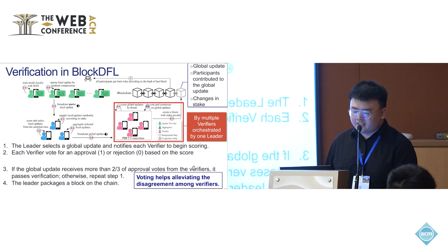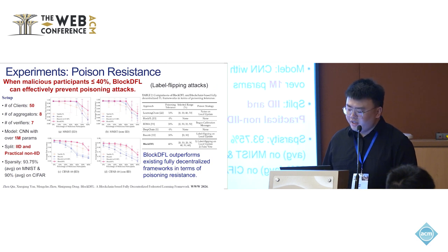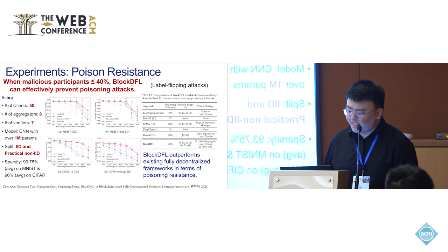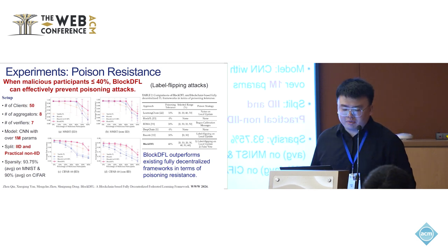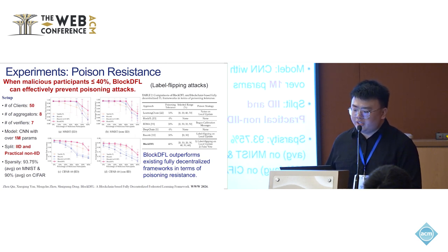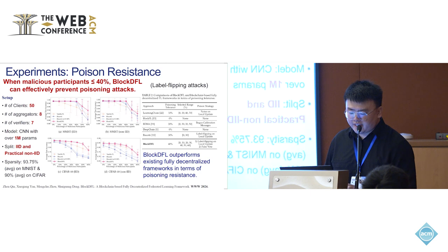The voting helps to alleviate disagreement among verifiers. To validate the effectiveness of BlockDFL, we perform experiments with 50 clients, including 8 aggregators and 7 verifiers. We granted malicious participants the ability to perform poisoning attacks in different roles: update providers perform label flipping attacks, aggregators randomly select key model updates, and malicious verifiers vote positively for benign participants. We found that when malicious participants are less than 40%, BlockDFL can effectively prevent poisoning attacks, and this outperforms existing fully decentralized frameworks in terms of poisoning resistance.